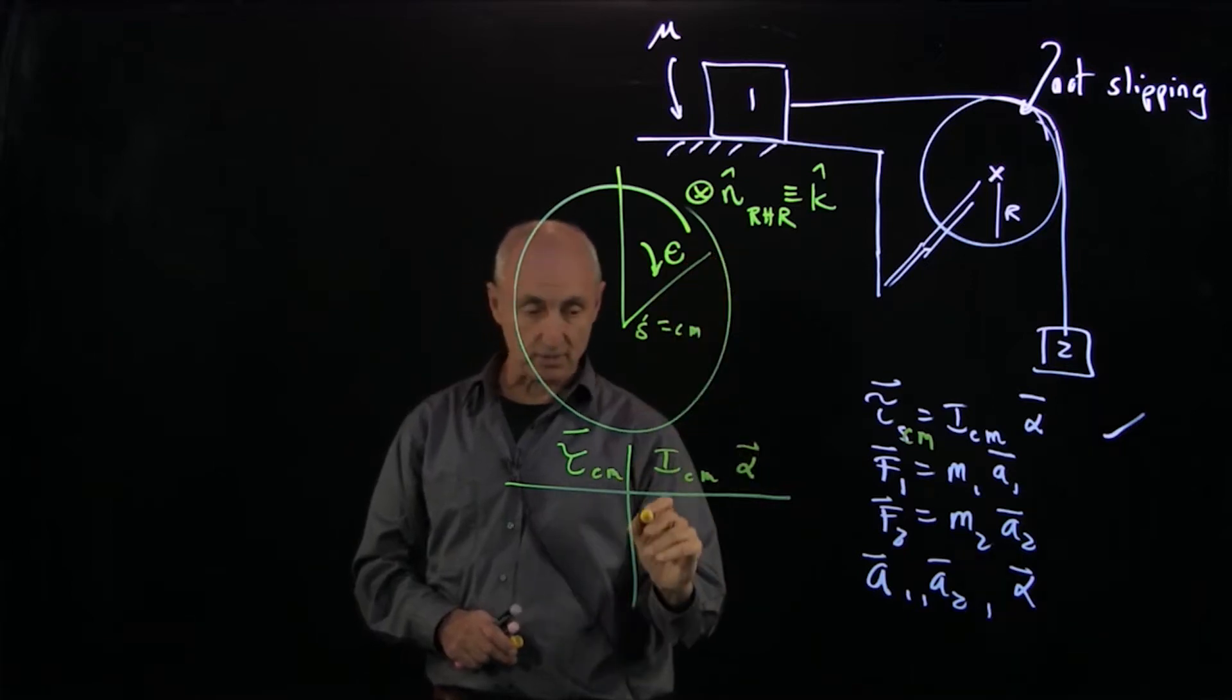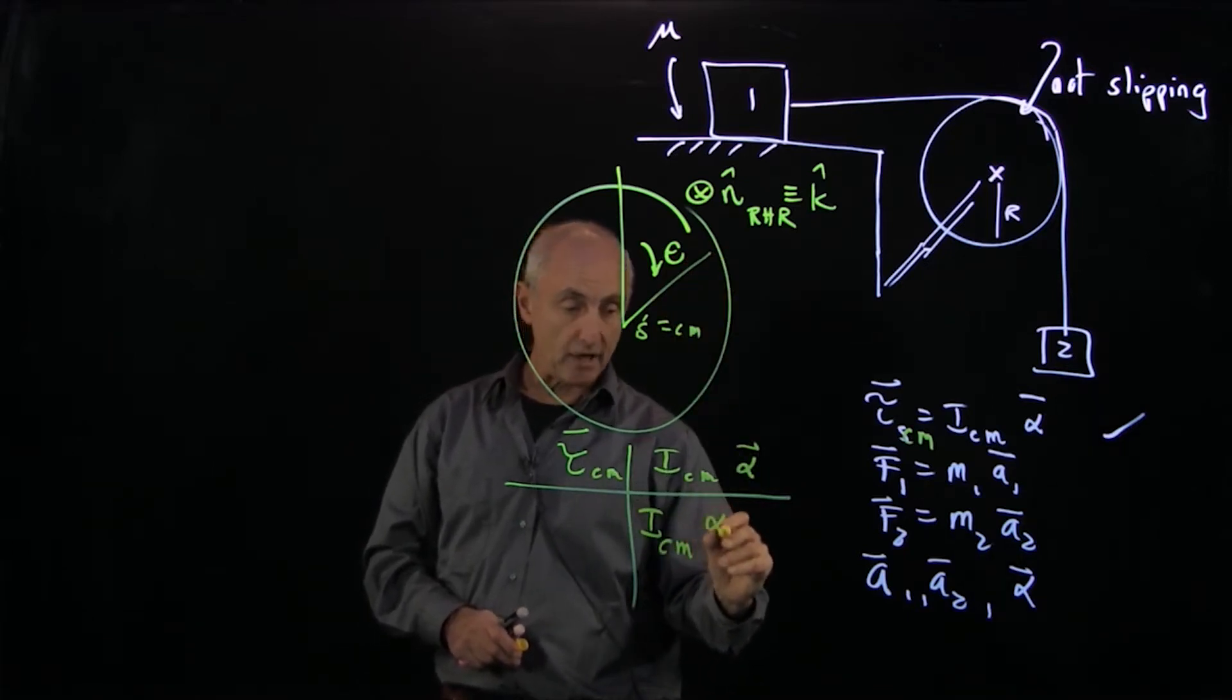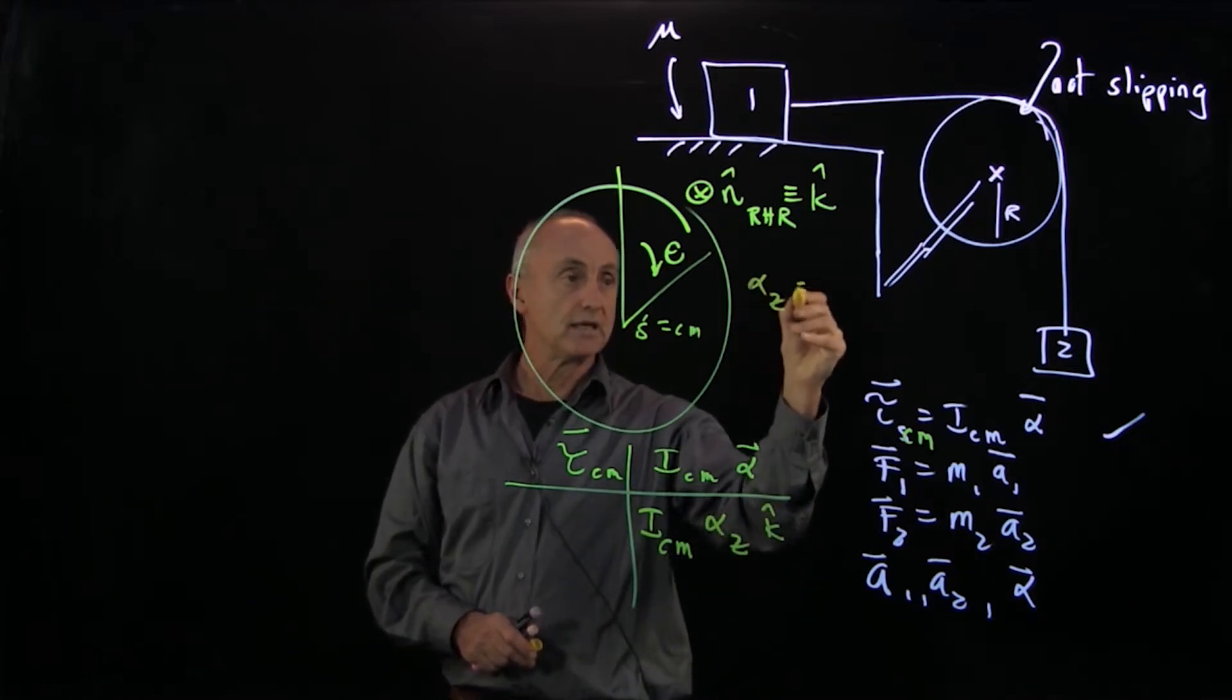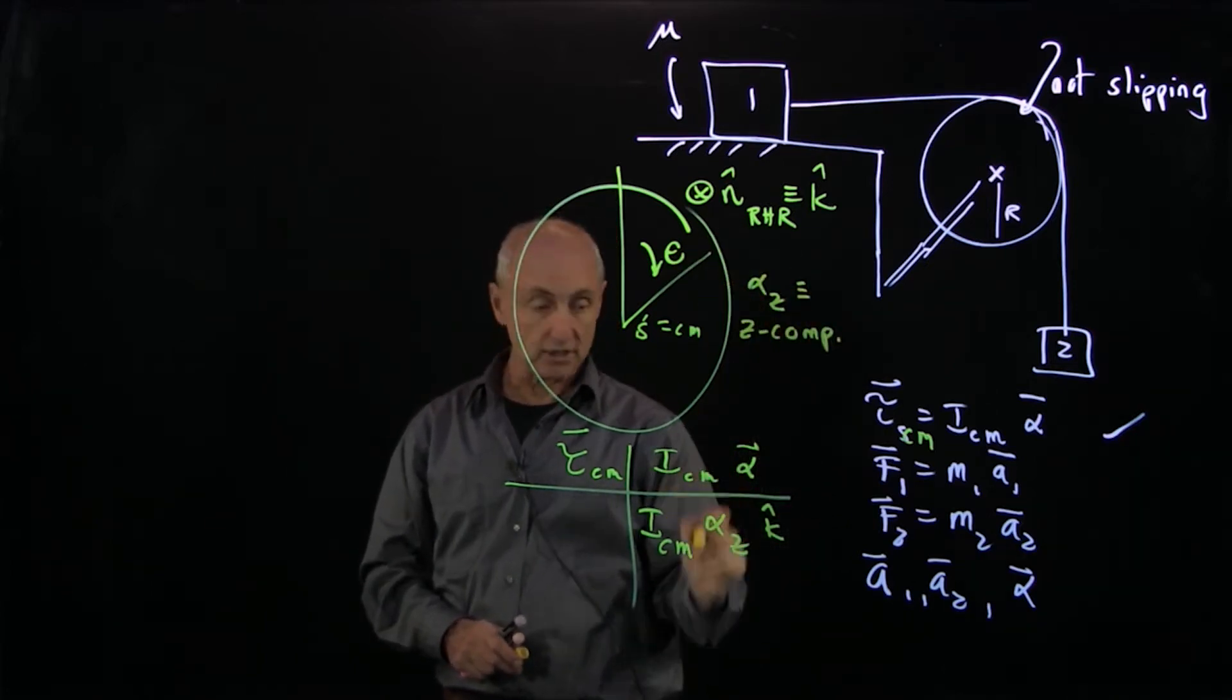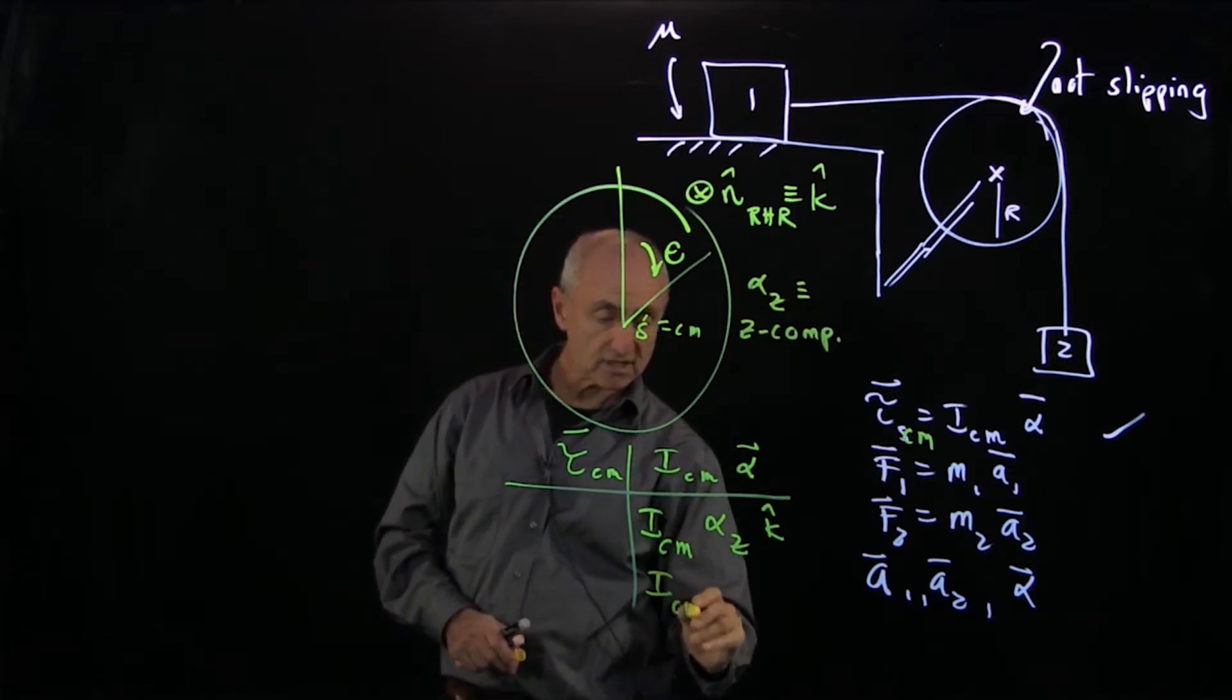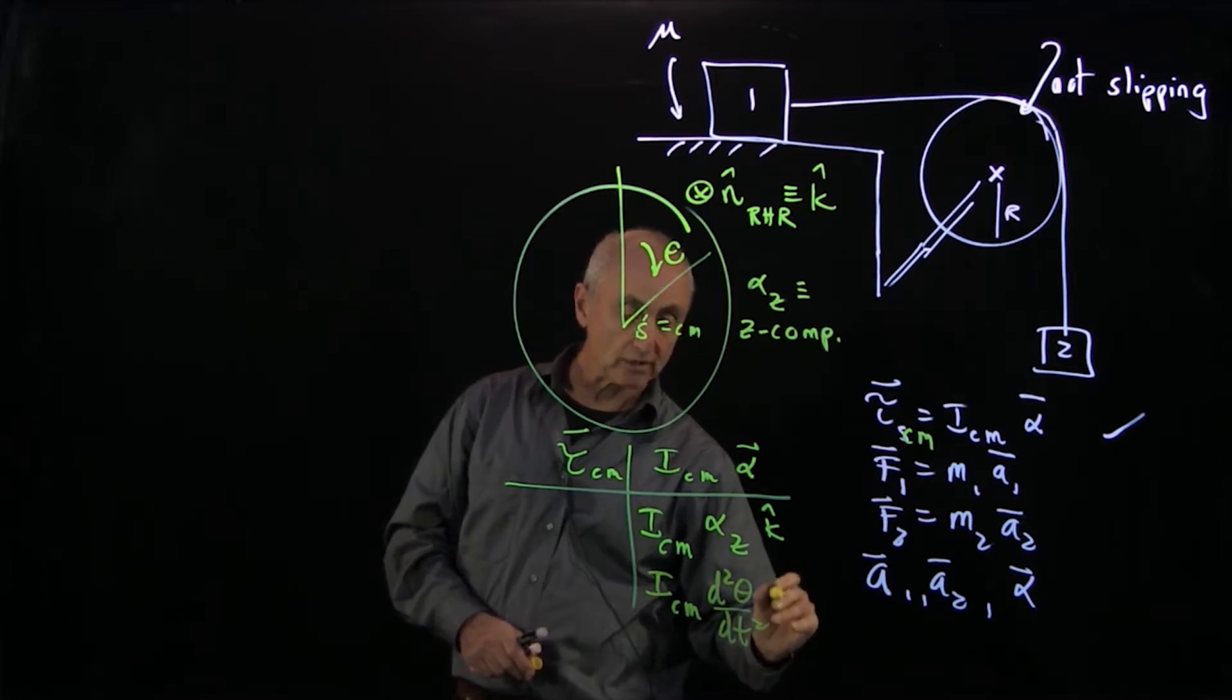As soon as I draw the coordinate system, then this side becomes the vector alpha z k hat, where alpha z is the z component of the angular acceleration. Technically, the reason this angle is there is because this is the second derivative of that angle, and that's well defined now.